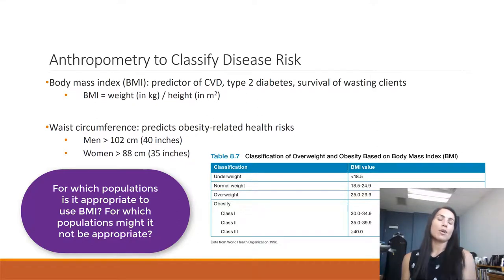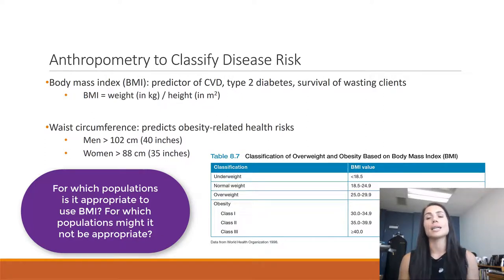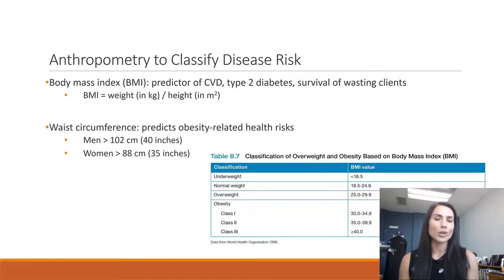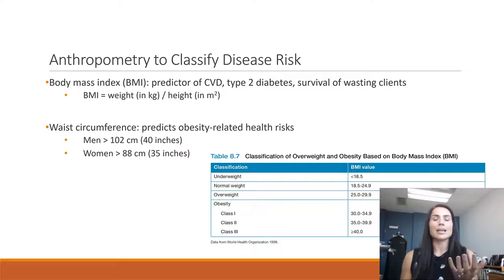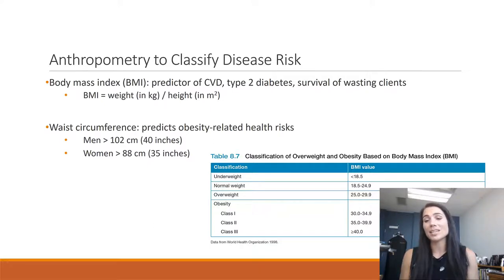Body mass index — BMI — hopefully you all know how to calculate that, and I'm happy to go over it in lab if needed. BMI is a predictor of cardiovascular disease and type 2 diabetes, and we know these disease states are directly related to someone's BMI category. Now BMI is not great for everyone — if you're an athlete with more lean body mass, your weight will be higher, so the ratio of weight to height is altered and your BMI might fall in the overweight or obese category. From a public health perspective, though, BMI is actually a pretty helpful tool for looking at the health of a community.